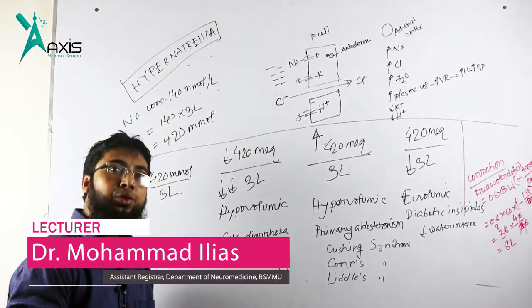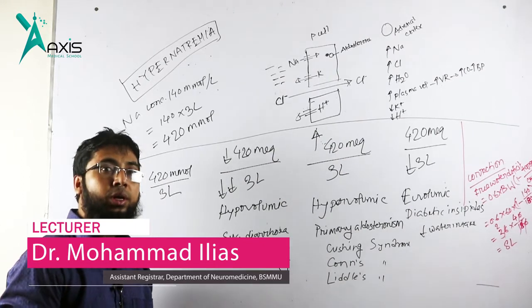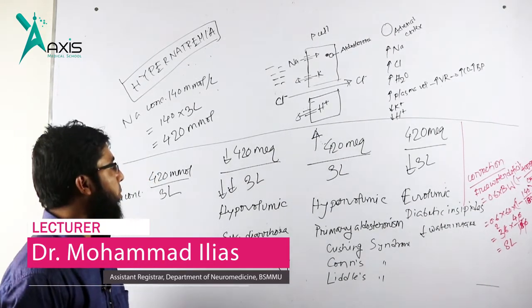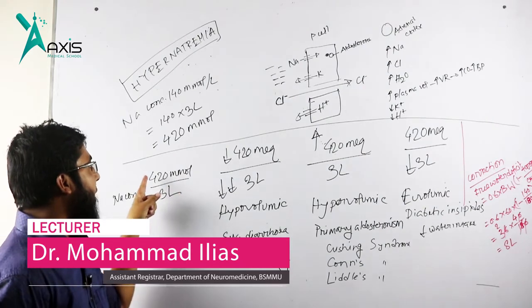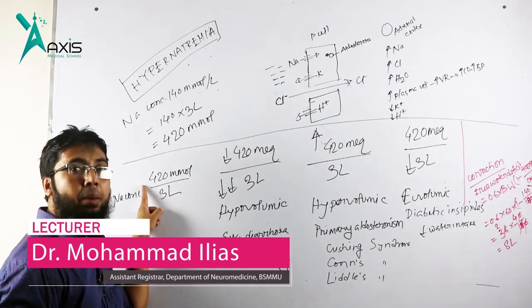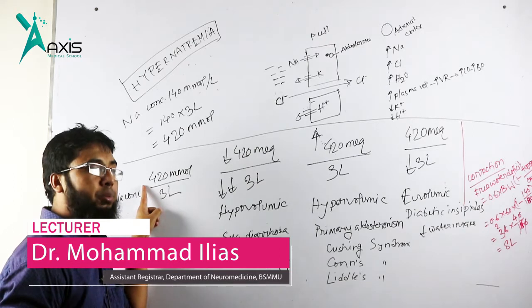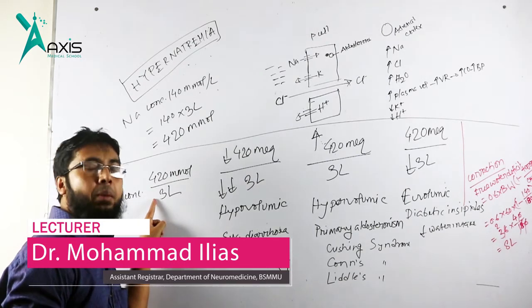What are the causes of hypernatremia? There are two parameters: total amount of sodium is 420, total amount of plasma is 3 liter.